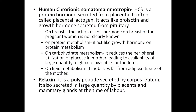On the movement of uterus, progesterone inhibits contraction of muscles in the pregnant uterus. On the breast, it causes enlargement and growth of the duct system. Human chorionic somatomammotropin (HCS), also called placental lactogen, is a protein hormone secreted from the placenta. It acts like prolactin and growth hormone secreted from the pituitary. On protein metabolism, it acts like growth hormone. On carbohydrate metabolism, it reduces peripheral utilization of glucose in the mother, making large quantities of glucose available for the fetus.